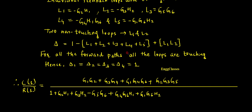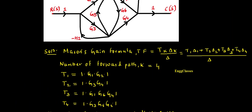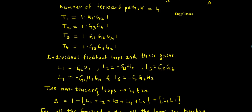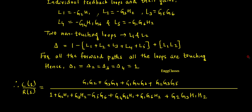Plus the two non-touching loop term L1 · L2: minus g2·h1 times minus g3·h2 gives plus g2·g3·h1·h2. So this is the complete expression for the transfer function using Mason's gain formula for this particular numerical. I have explained this step by step — I hope you have understood. If there are any doubts, please let me know in the comment section and I am happy to answer. Thank you for watching.